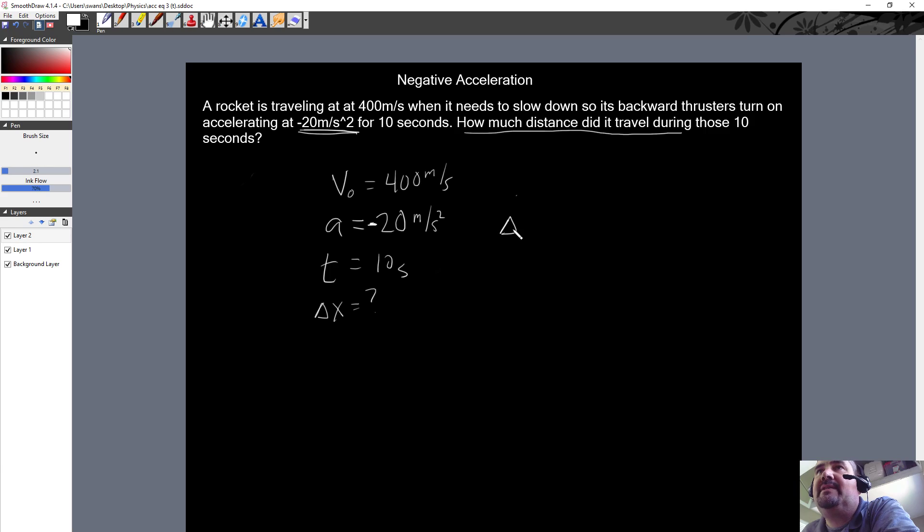It's the only one that has all of it. So if we put in delta x—actually delta x is nice because we don't know it, and this equation already solves for it, which is nice. We don't need to do any algebra; we just need to do some adding and stuff like that. Initial velocity, 400, times the time, 10 seconds.